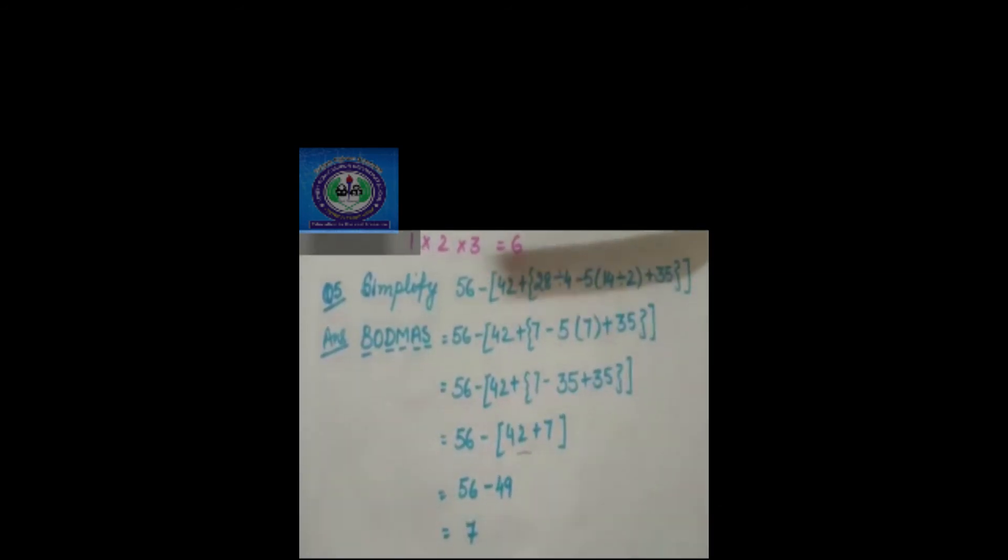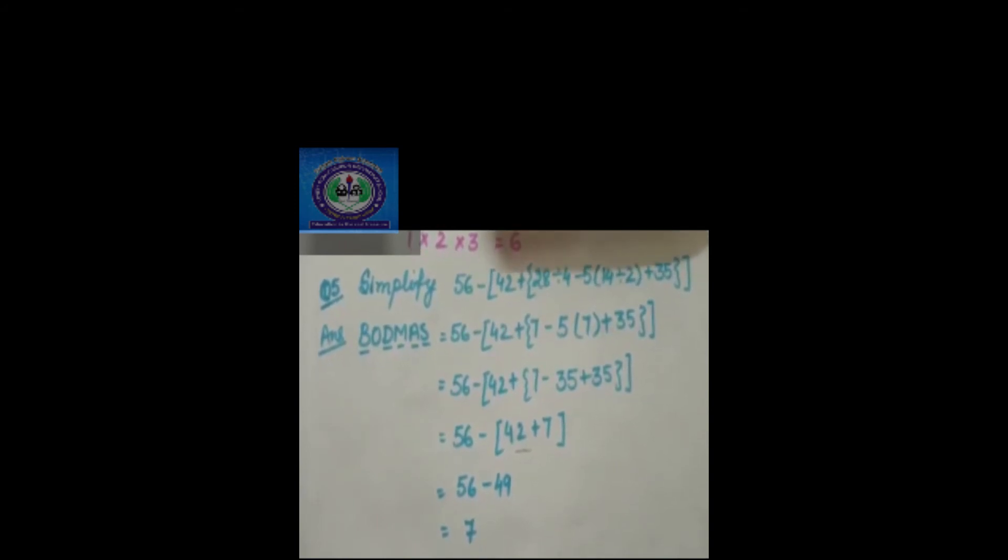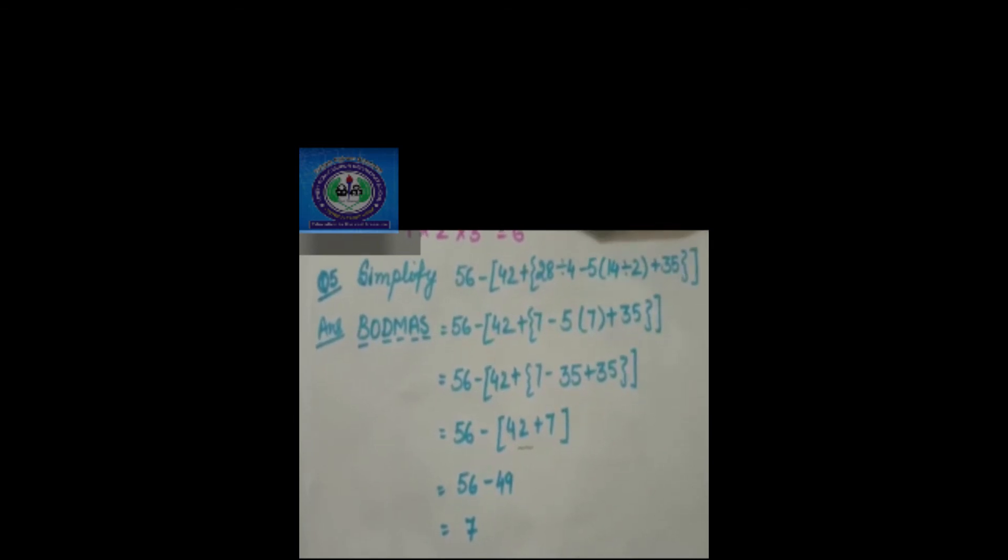In this question of simplification I am going to use all the BODMAS rules: bracket, division, multiplication, addition, subtraction, all the rules. So as you have already learned that we have to move from inside to outside. So let us solve.